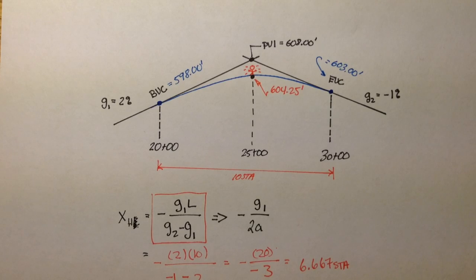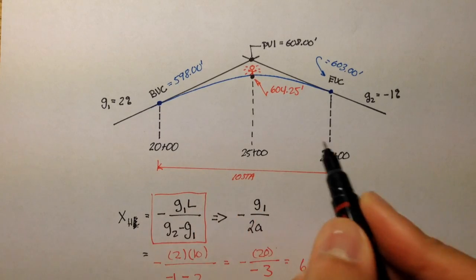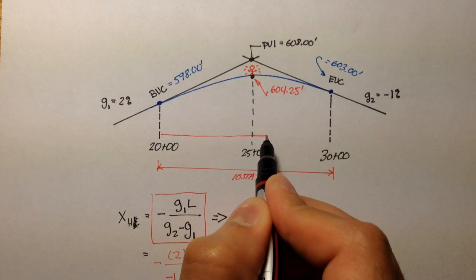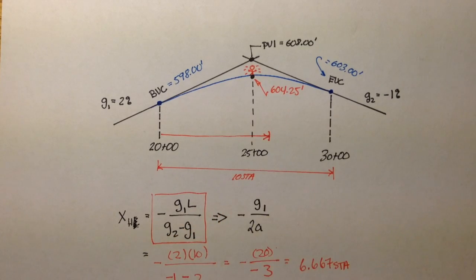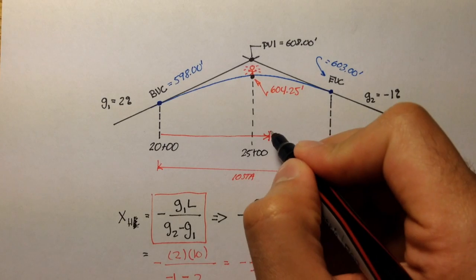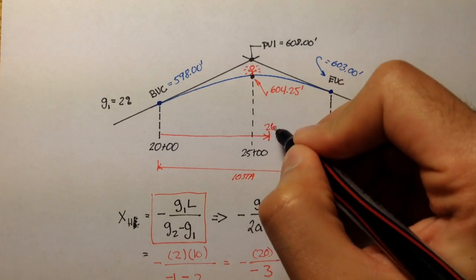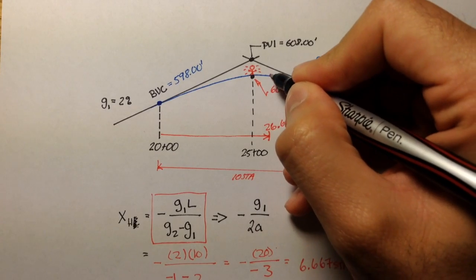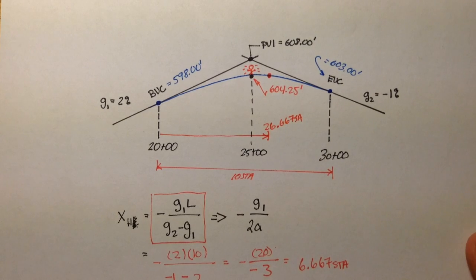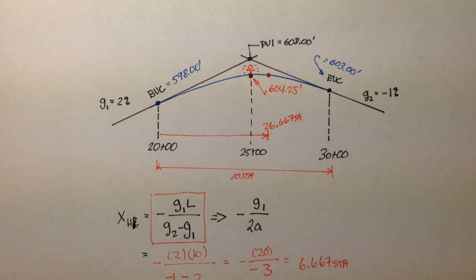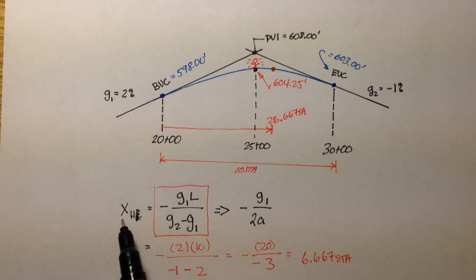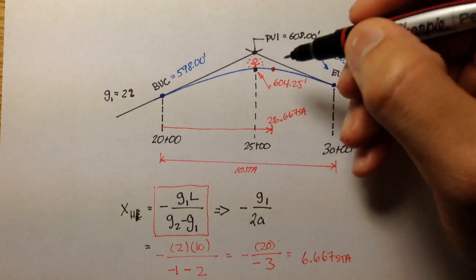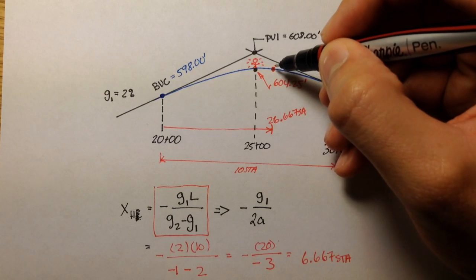So that point is located somewhere here. 20 plus 6.67 would be 26.667 stations. This is where it's located. So the highest point is right there. And please note, this drawing is not to scale. So xh is 6.67 stations. That's where the location of the highest point is.